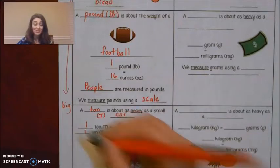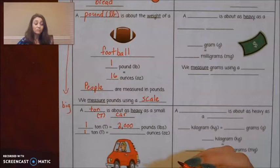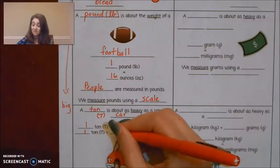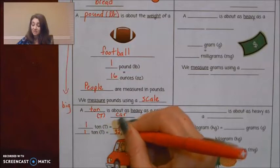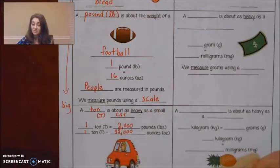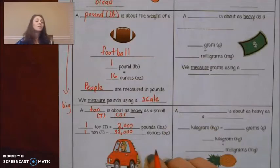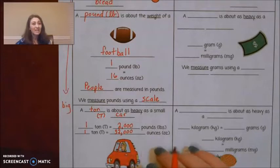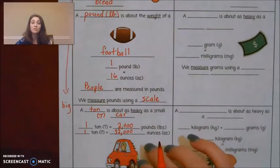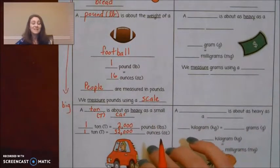One ton also equals 32,000 ounces. It's pretty big. So this would be used to measure like a big rig, like an 18-wheeler, or a train, something huge is what you would use to measure. You would use tons to measure.